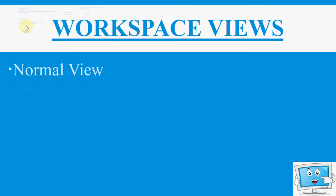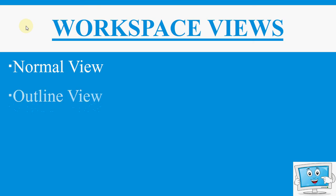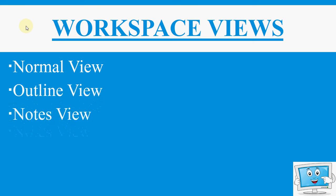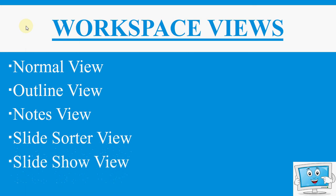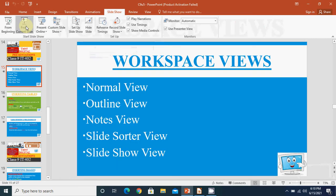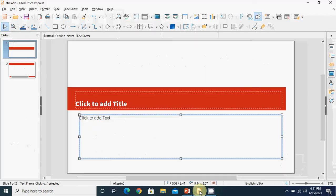First of all we have workspace views. Workspace means the area in a presentation where we create a slide. We normally have 5 views: Normal view, Outline view, Notes view, Slide Sorter view, and Slideshow view. We will understand each one by one.